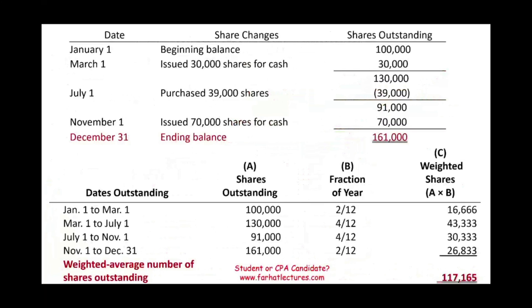So the computation is: 100,000 times 2/12; plus 130,000 times 4/12; plus 91,000 times 4/12; plus 161,000 times 2/12. Those give us the weighted average number of shares outstanding. With rounding — because we have 0.333 repeating — the weighted average is approximately 117,000 to 165,000 shares, assuming the computation is right.